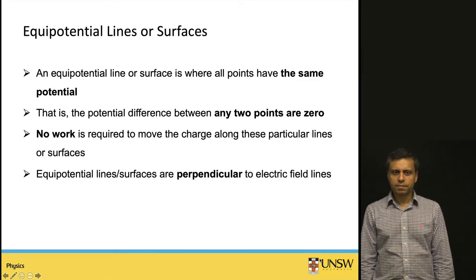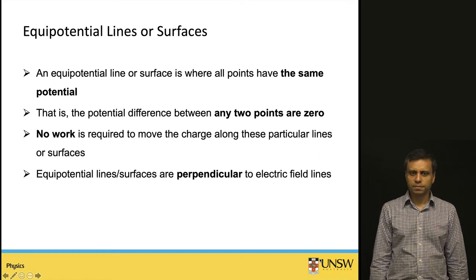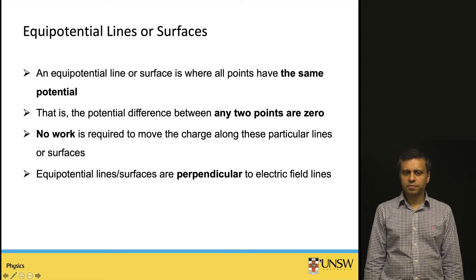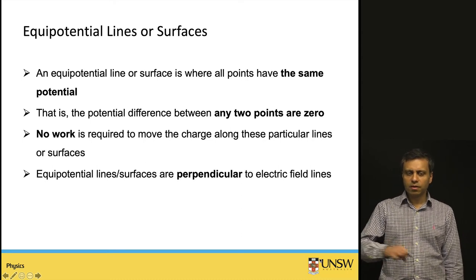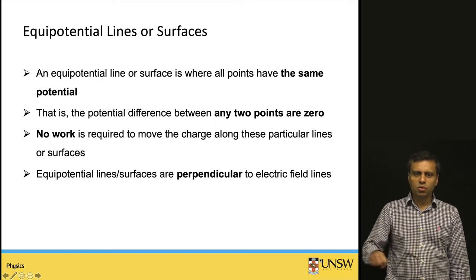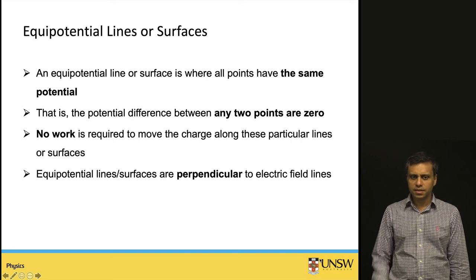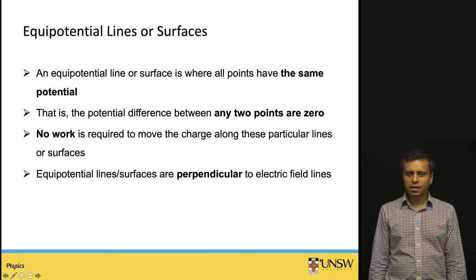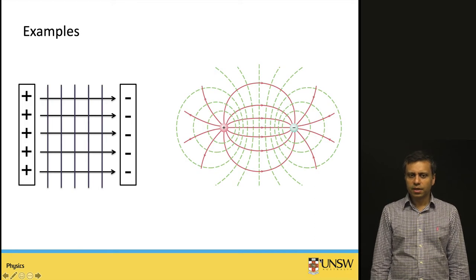Equipotential lines or surfaces are where all points have the same potential. This means the potential difference between any two points on such a surface is zero. If you move a charge along an equipotential line or over an equipotential surface, there is no work done because there is no potential difference. The potential energy is the same, and equipotential lines are perpendicular to electric field lines.